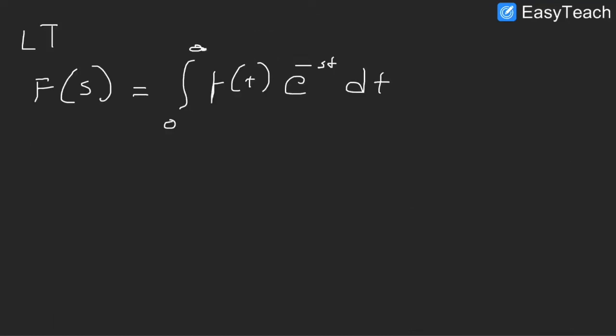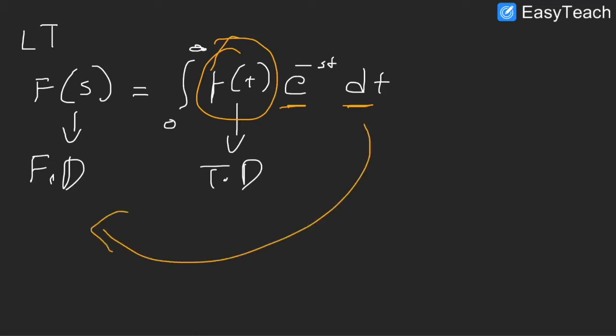So here is my expression for finding the Laplace transform. This is my frequency domain signal and this is my time domain signal. So I start off by having a time domain signal, and then I integrate it with this term e to the power of minus st with respect to time from zero to infinity. And that way I get my function in the frequency domain. So we go from time domain to frequency domain in Laplace transforms.